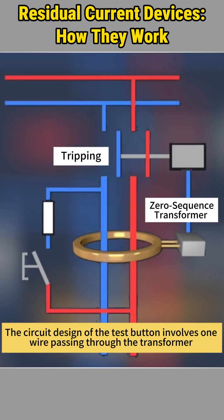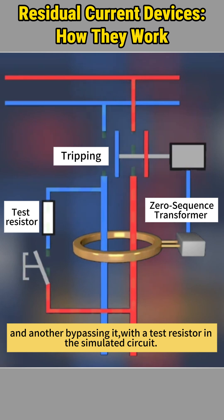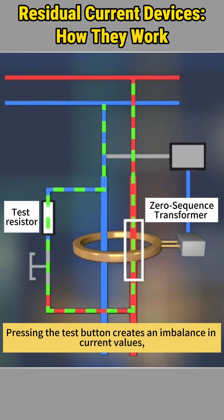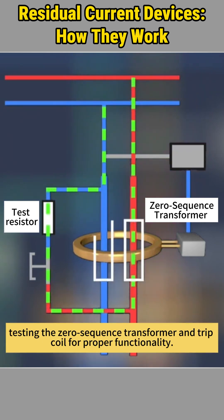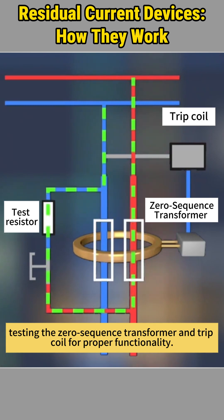The circuit design of the test button involves one wire passing through the transformer and another bypassing it, with a test resistor in the simulated circuit. Pressing the test button creates an imbalance in current values, testing the zero-sequence transformer and trip coil for proper functionality.